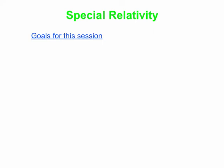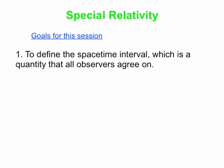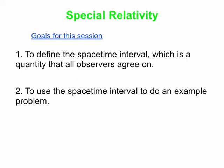Today we're going to start talking about special relativity. We have two goals for today. We'll define something we call the space-time interval. A lot of people, when they dive into special relativity, start by focusing on things that are different for various observers — lengths, distances, time intervals between two events. Those can be different depending on the observer. But the space-time interval is something that everybody agrees on, so it's interesting to start with that. And we're going to use the space-time interval to do an example problem.